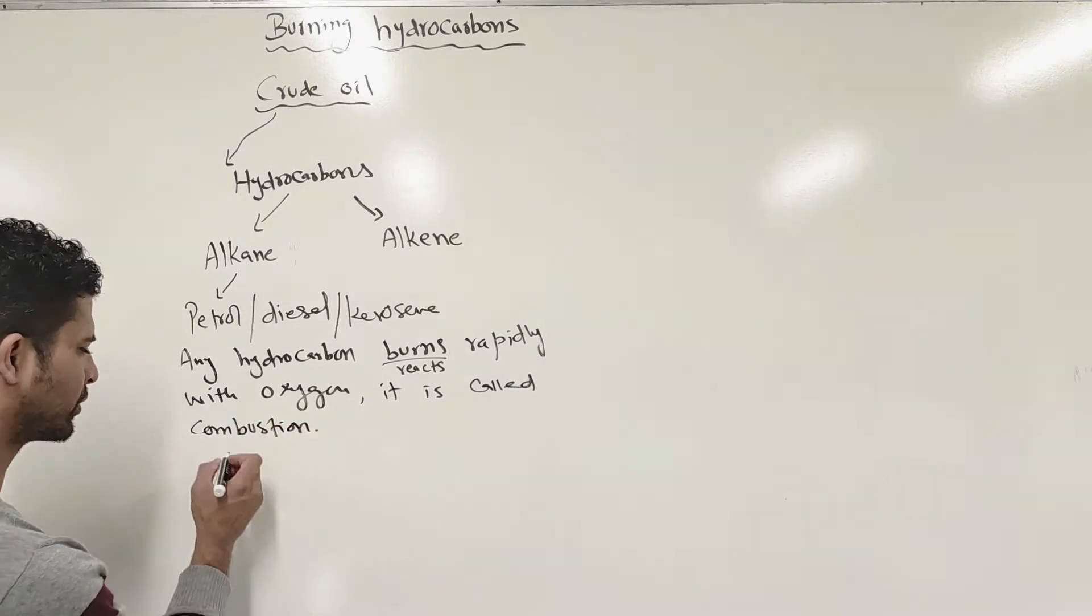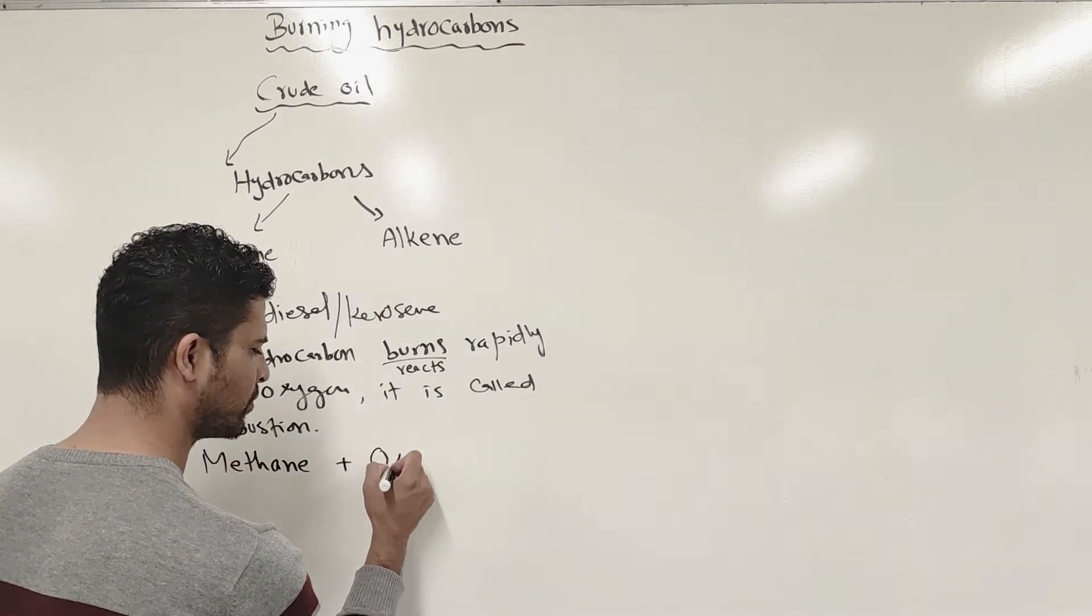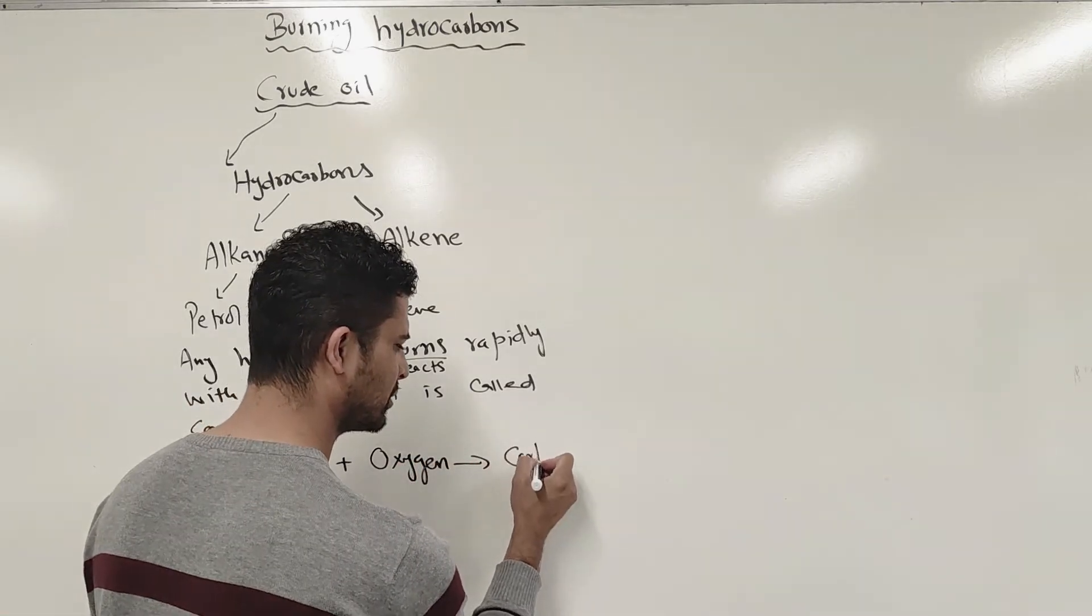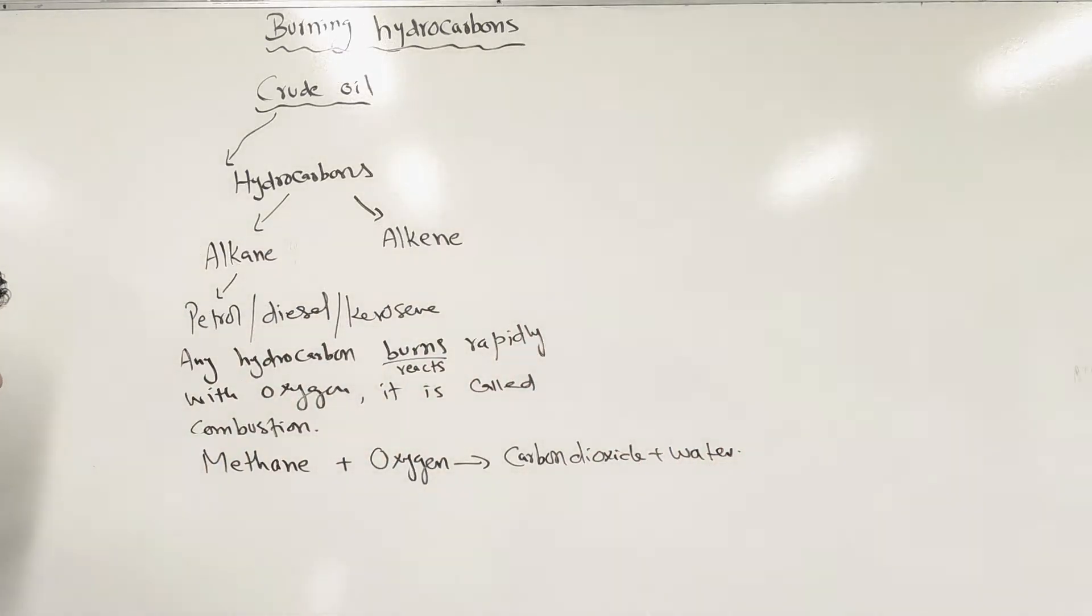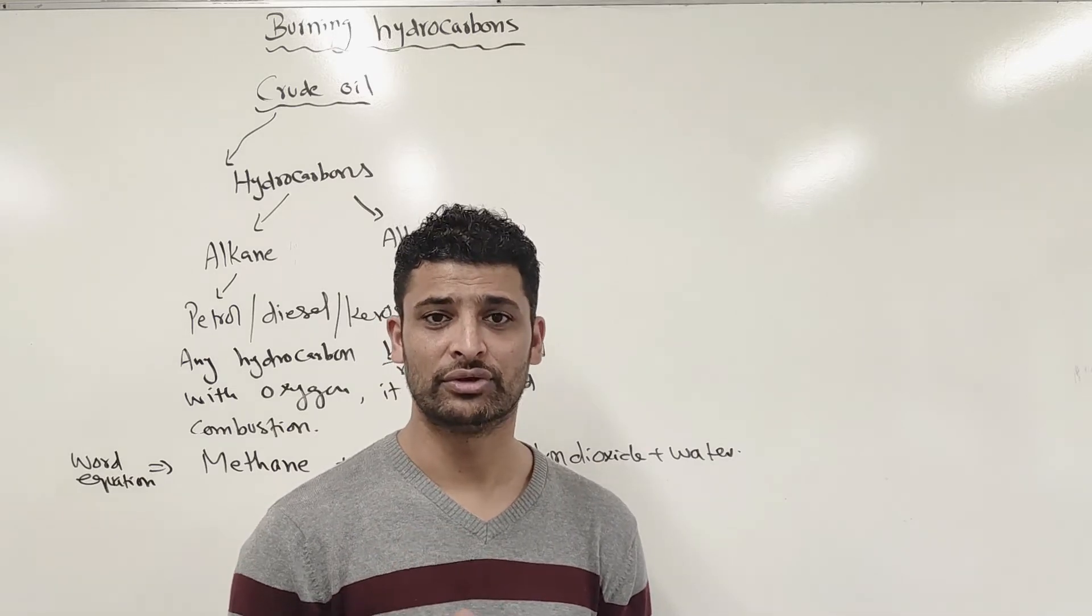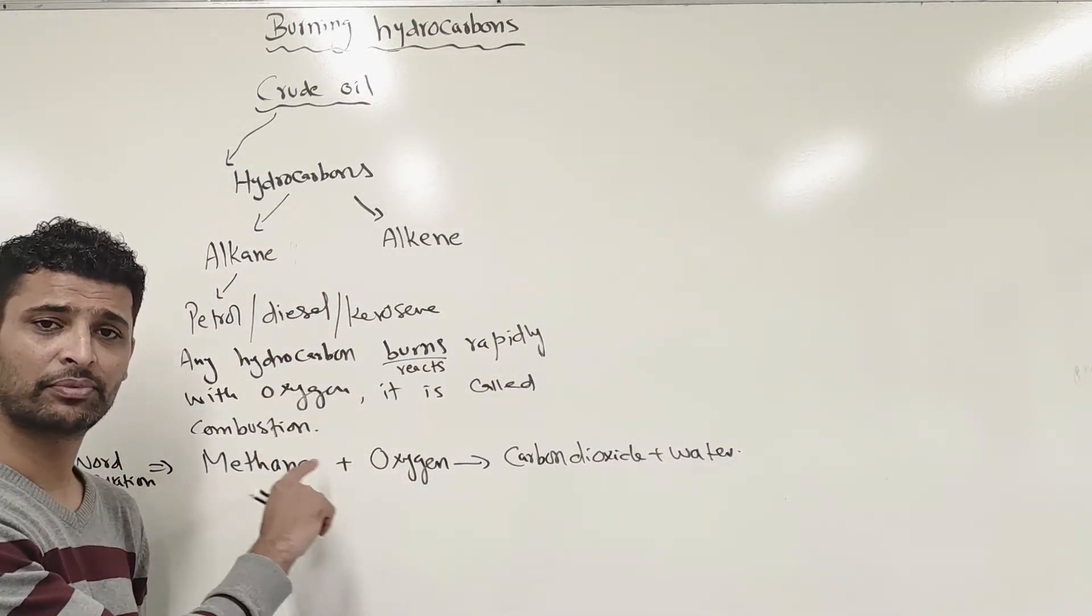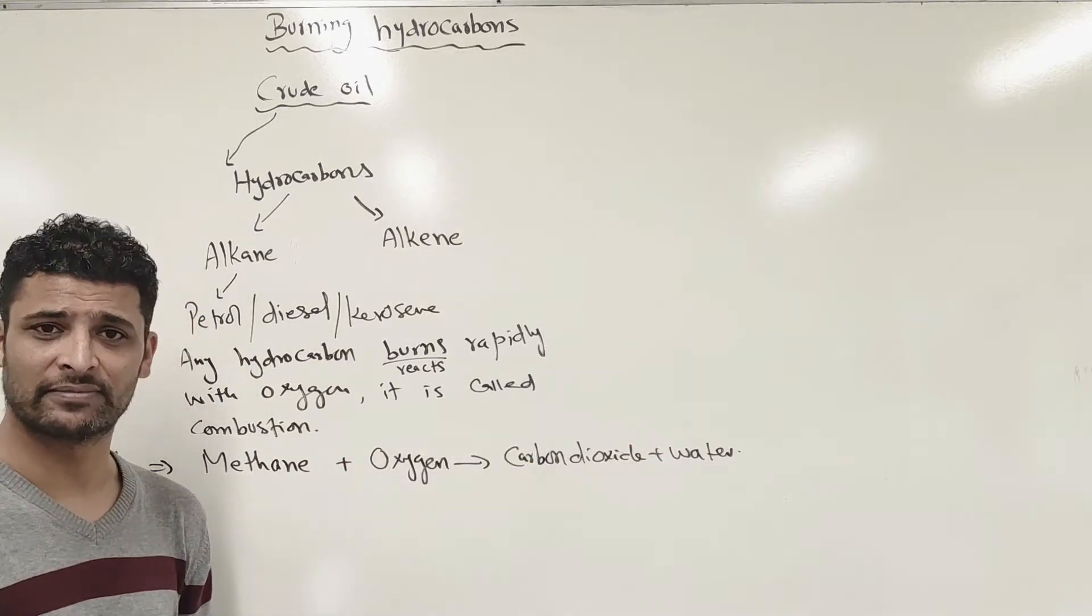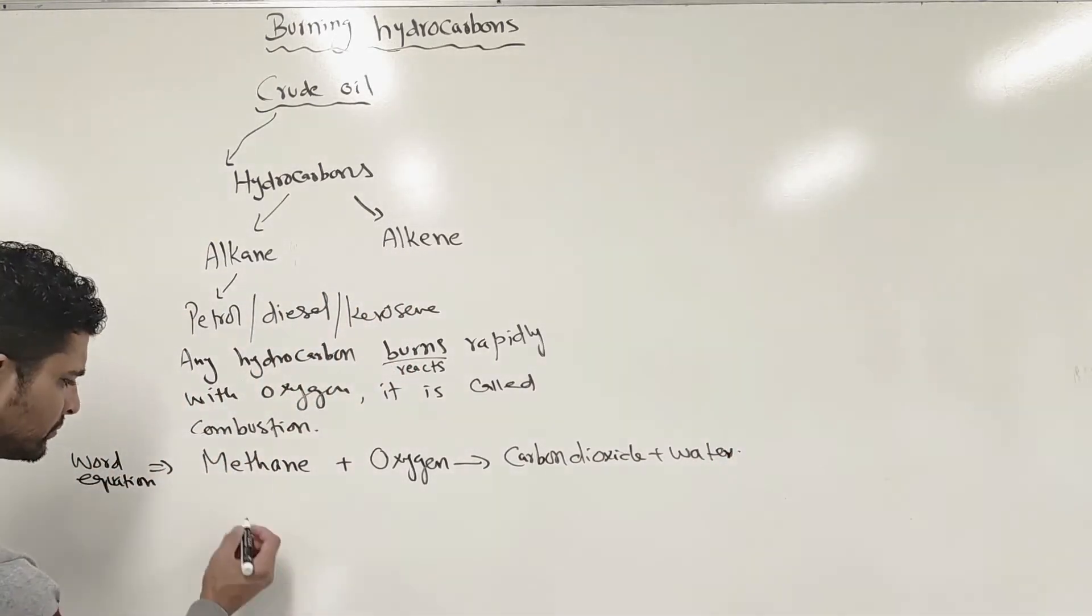Now for the word equation: methane plus oxygen produces carbon dioxide plus water. This is the word equation. When you attempt this question in exams, you have to write what they're asking. The word equation is simple: just write the name of the hydrocarbon - methane, ethane, butane, propane, whatever. The rest remains the same. There's no change in the reactants or products apart from the hydrocarbon name.